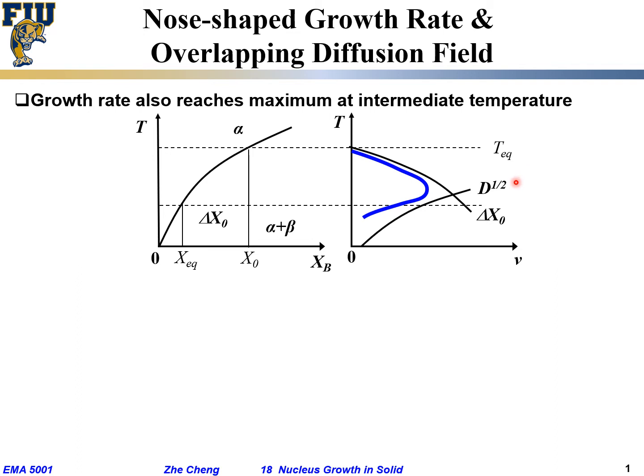Which means, in terms of diffusion, the higher the temperature, the growth rate will be helped by diffusion term. But at the same time, this delta x term, x0, that is our supersaturation. As we increase in temperature, our supersaturation becomes smaller and smaller. This term also determines the growth rate.